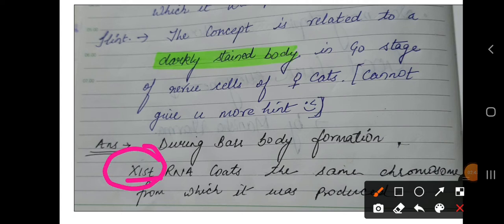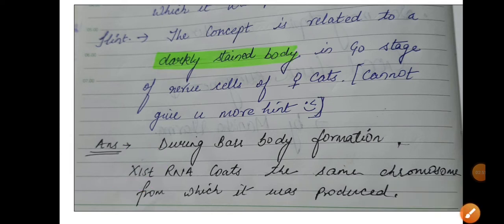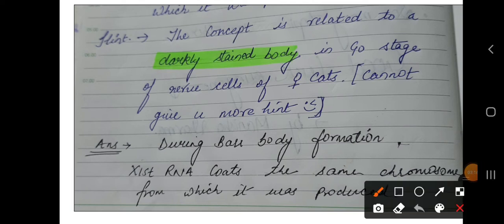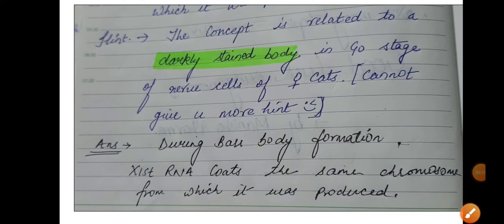The answer is XIST RNA. XIST RNA is the RNA that codes the chromosome from which it was produced. Females have Barr bodies, which are formed in order to balance the products of the sex chromosomes. While autosomes are equal in both males and females, sex chromosome products need to be equalized — and this is achieved through Barr body formation, which involves XIST RNA.